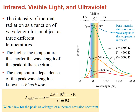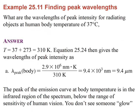Example: What is the wavelength of peak intensity for an object at body temperature of 37°C? First, convert to Kelvin: 37 + 273 = 310 K. Using Wien's Law, the peak wavelength equals the constant divided by 310 K, giving approximately 9.4 micrometers.